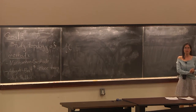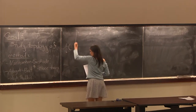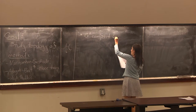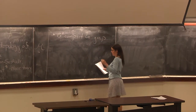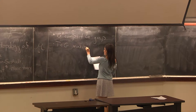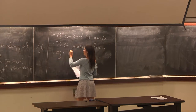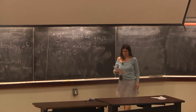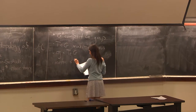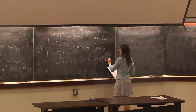That's the goal of the talk. So I need to establish some notation, and this notation will be fixed throughout. G is a compact Lie group, and T contained in G is going to be the maximal torus.